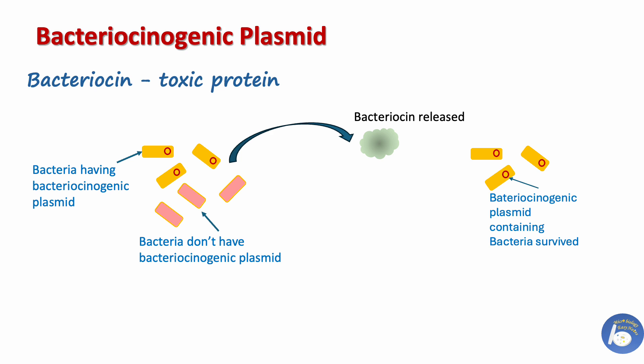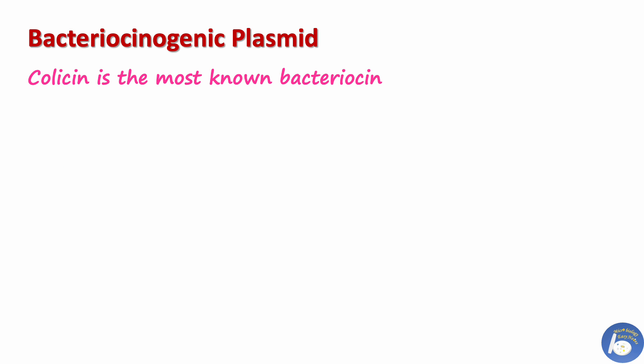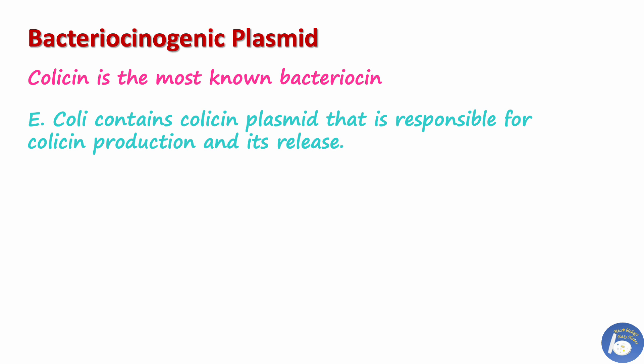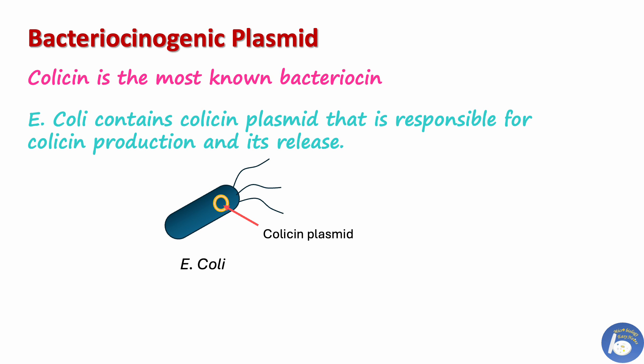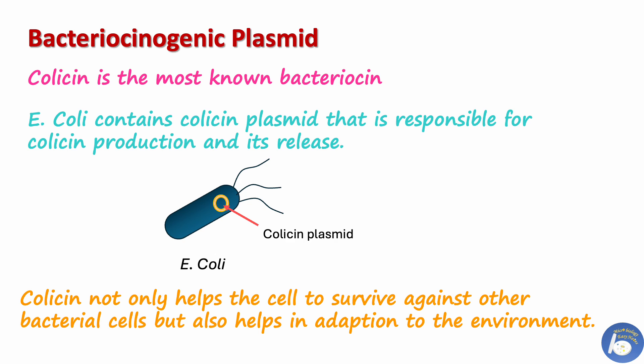Bacteriocinogenic plasmid: this plasmid produces bacteriocin, which is a toxic protein that kills or limits the growth of surrounding bacteria lacking the bacteriocinogenic plasmid. Colicin is the most well-known bacteriocin and is produced by E. coli. E. coli contains the colicin plasmid responsible for colicin production and release. Colicin kills other bacterial strains, ending competition for the E. coli cell, helping it survive and adapt to the environment.